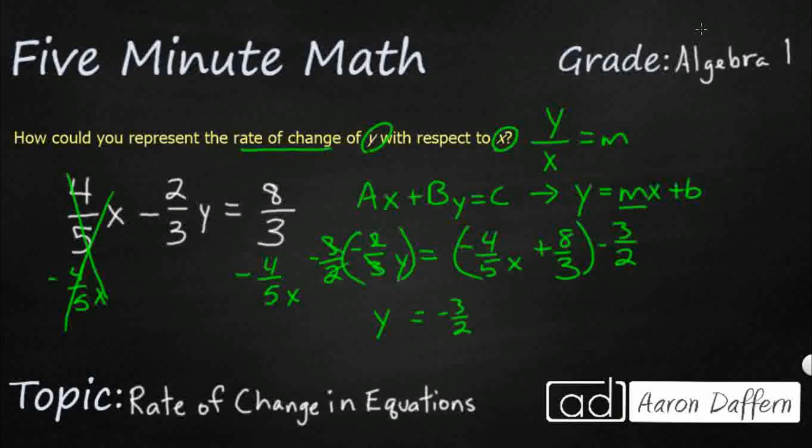So we can distribute that out. 3 halves, negative 4 fifths x, plus, and then it's that same thing, 8 thirds, negative 3 halves.